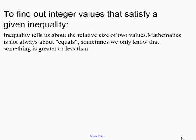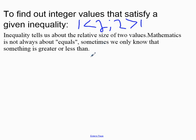To find integer values that satisfy a given inequality, all you need to know is a basic concept such as 1 being less than 2, which obviously means that 2 is greater than 1. If I was to write the 2 here, then the sign would change. Knowing that 1 is less than 2, or 2 is greater than 1, is a basic concept we need to know to explain what integer values satisfy a given inequality.